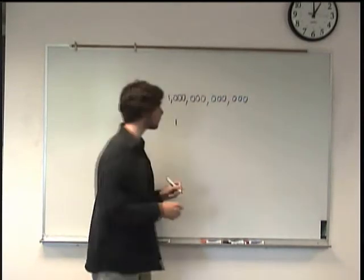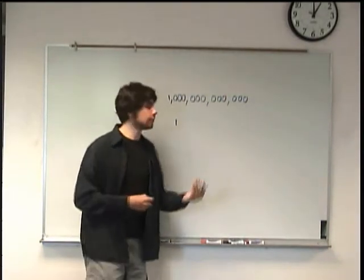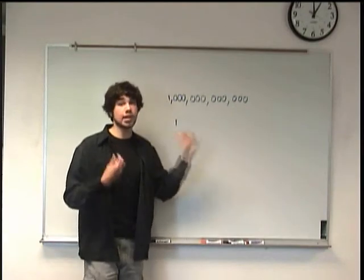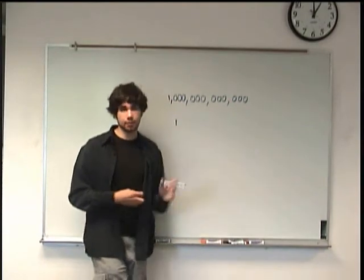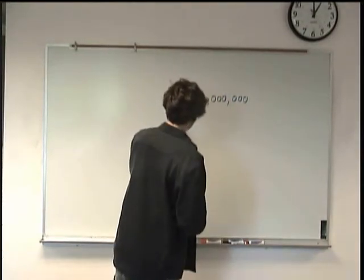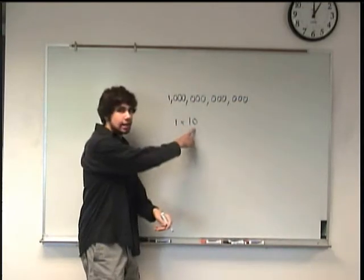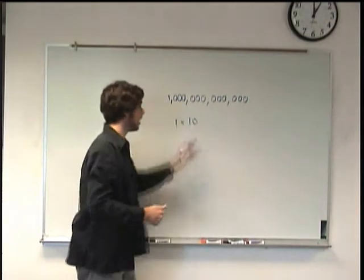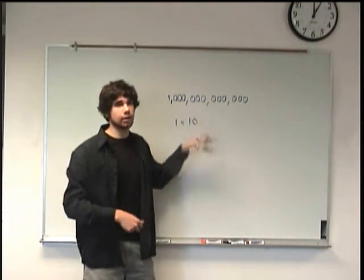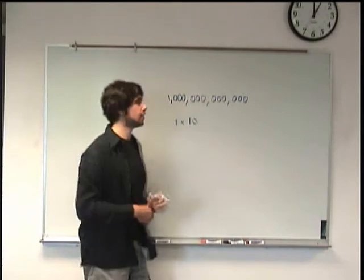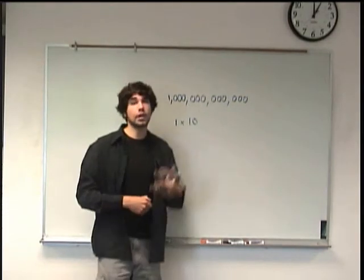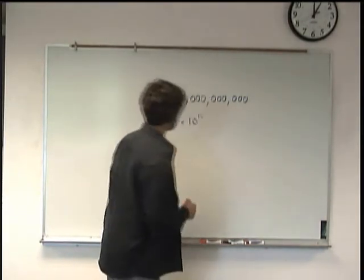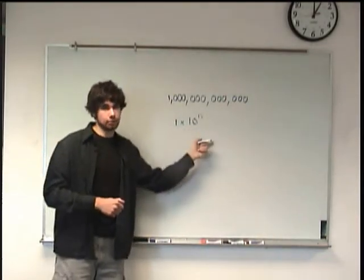So we can write the one right there, and then if you remember there is another part of scientific notation which tells us the number of zeros that come after the first non-zero number. So to do that we indicate this times ten, this is the power of ten which is the placeholders for all these zeros, and then we have to indicate with an exponent up here the actual number of zeros that comes after the first non-zero number. In this case it's twelve. So we write one trillion as one times ten to the twelve.